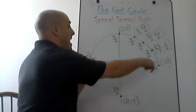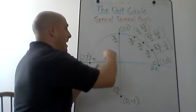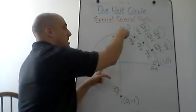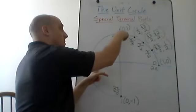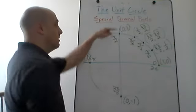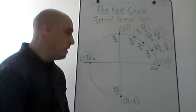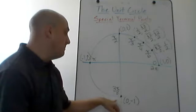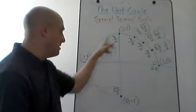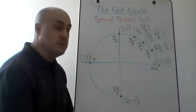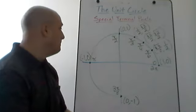If I go pi over 2, that takes me a quarter of the way around the full circle, up to the terminal point (0, 1). And then 3 pi over 2 is down here — that's three quarters of the way around the circle — at (0, -1).